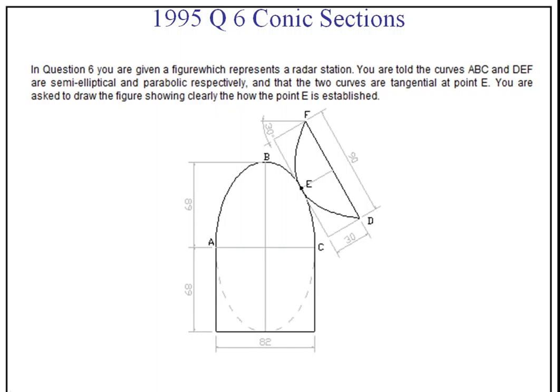1995 question 6, conic sections. In question 6 you are given a figure which represents a radar station. You are told that curves ABC and DEF are semi-elliptical and parabolic respectively. So we see here ABC is half an ellipse and this here is a parabolic shape. The two curves are tangential at the point E.